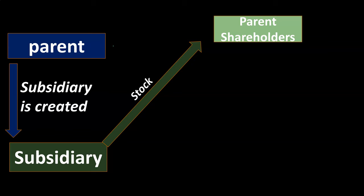During a period of contraction, a company might say they have a lot of areas that aren't their core business, and they'd like to spin those off while still utilizing the related assets. So the parent creates a subsidiary, takes the assets from the division it no longer wants to focus on, and puts them into the subsidiary. Then the stock of that subsidiary is provided to the parent shareholders — who are the owners of the parent corporation.